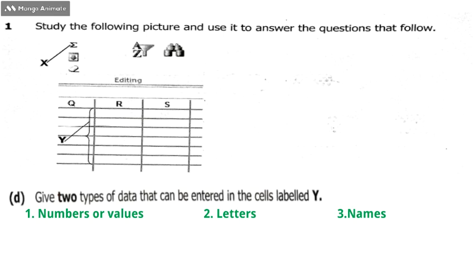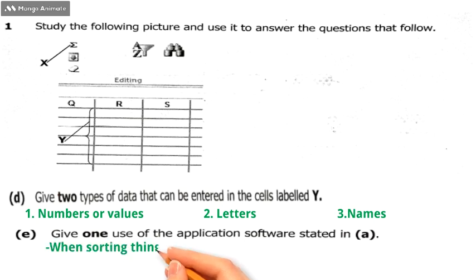We're going to question 1e: give one use of the application software stated in A. So this software we can use it when you are sorting things. It can be names of the learners in class, it can be names of items you have. You can sort them using Excel. The other one is also for making budgets.